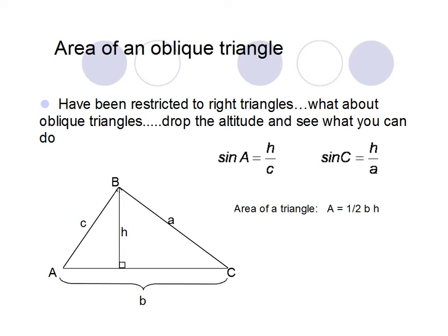Up to now, we've focused a lot on right triangles and done a lot with SOHCAHTOA. If we're solving a triangle — meaning find all of its missing parts — we use SOHCAHTOA, but that only works on a right triangle. Today, we're going to focus on oblique triangles, which are basically just non-right triangles.